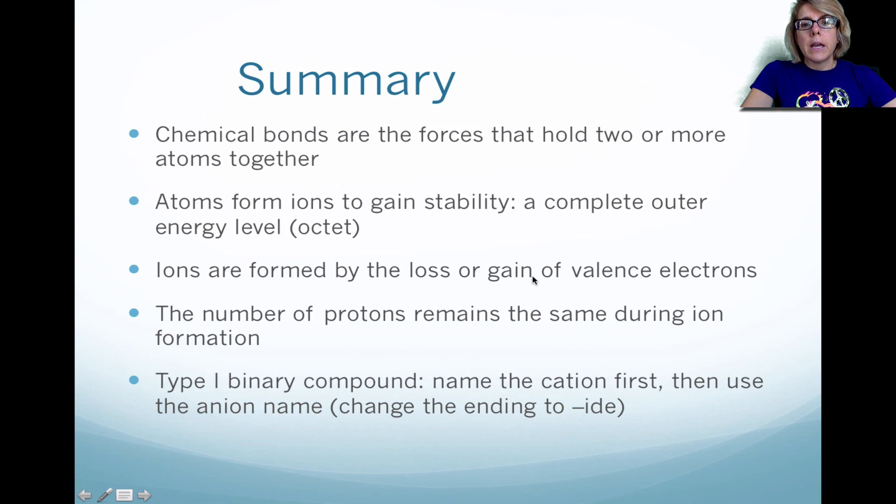Okay, so in summary, chemical bonds are forces that hold two or more atoms together. And typically when we get an ion, we're forming an ion because it's more stable. It essentially forms a complete octet, or it becomes noble gas-like. Please note that ions are formed either by the gain or loss of valence electrons. And please remember that when you are forming an ion, you must keep the number of protons the same. So the only thing that changes is the number of valence electrons. And then lastly, type 1 binary compounds, you want to name the cation first, and then use the anion name. And remember the anion is where you're removing the ending and just changing it to -ide.